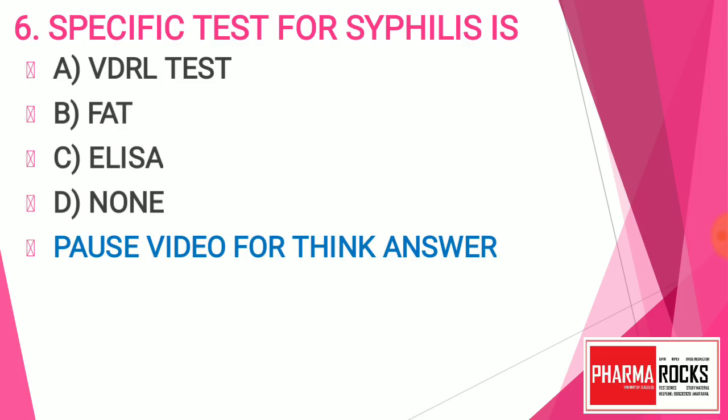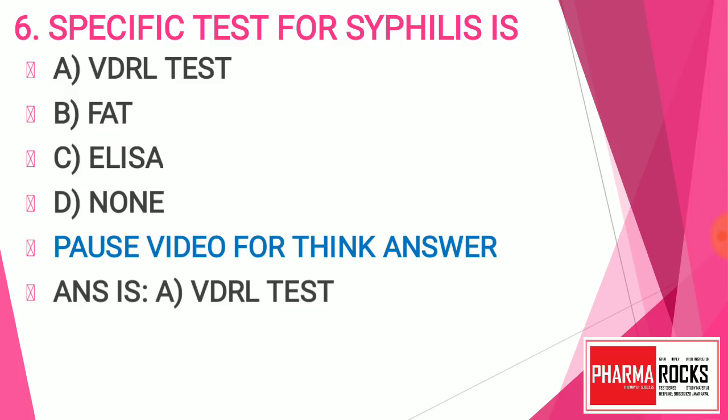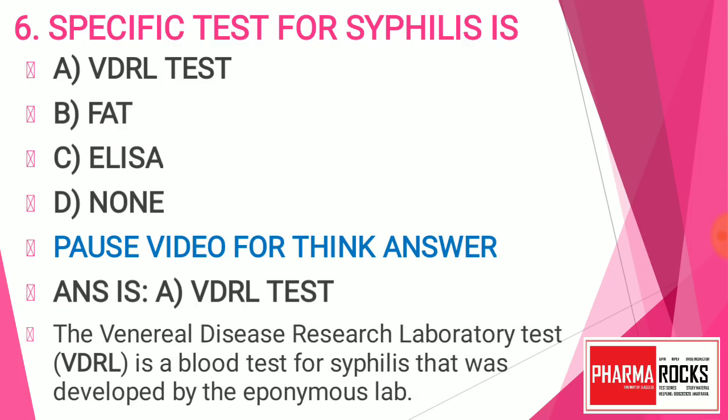It is time for the answer. The answer is A — VDRL test. VDRL test is performed for syphilis. VDRL stands for Venereal Disease Research Laboratory. It is a blood test for syphilis that was developed by the eponymous laboratory.